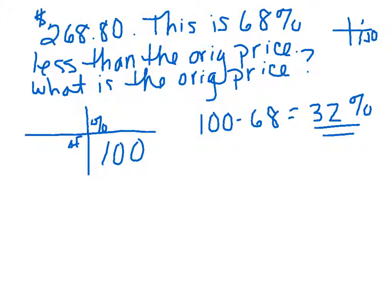So let's rewrite that. $268.80 is 32% of what number? That's in a nutshell what we need to solve. So now let's look at our grid.